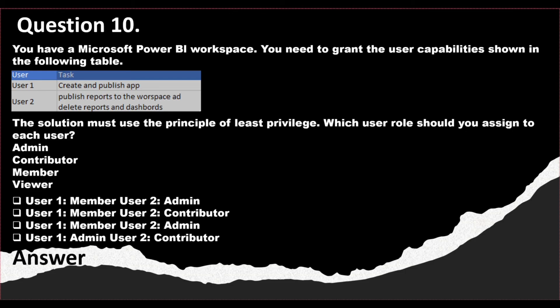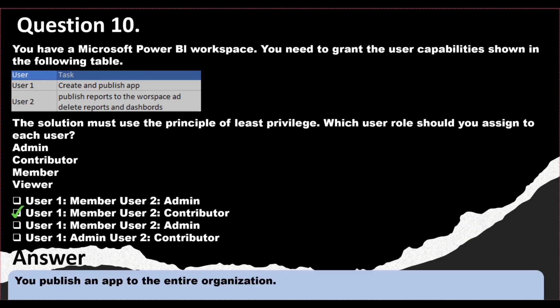Question number ten: you have a Power BI workspace. User 1's task is to create and publish an app; User 2's task is to publish reports to the workspace and add and delete reports and dashboards. The solution must use the principle of least privilege. The available roles are admin, contributor, member, and viewer. The correct answer is: User 1 should be a Member and User 2 should be a Contributor.